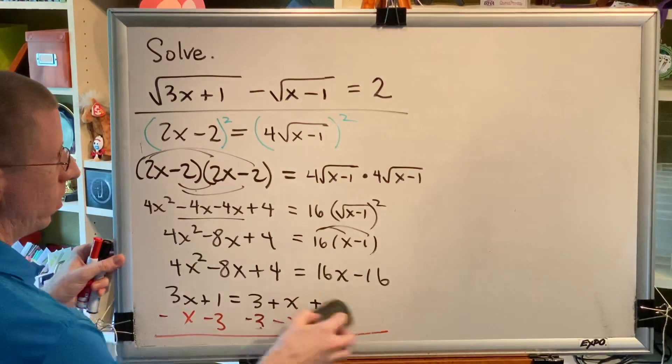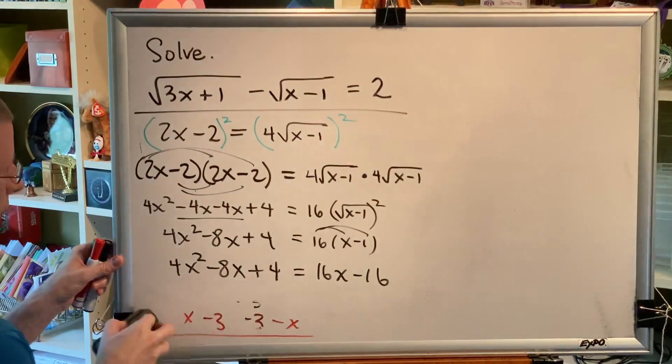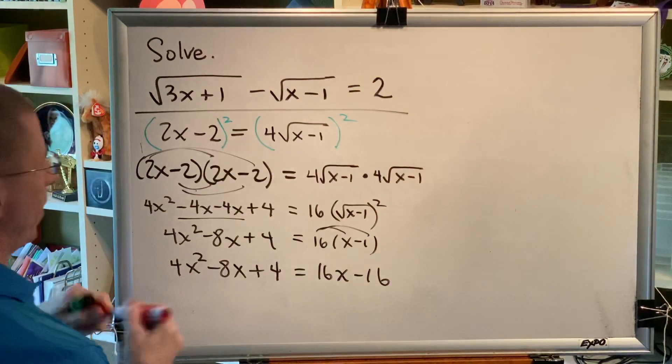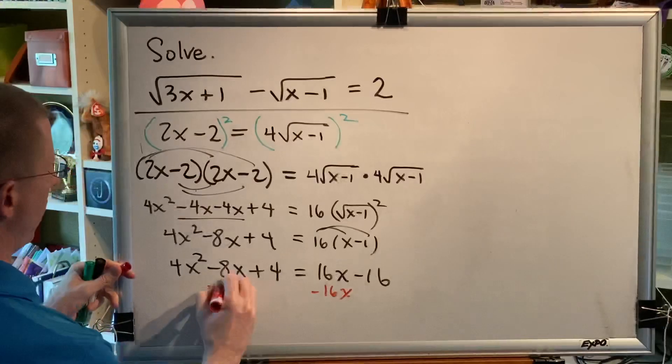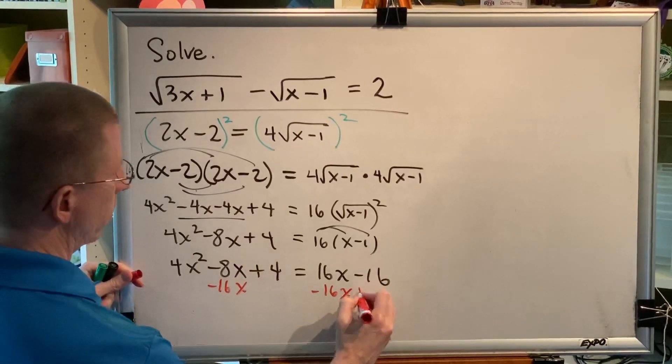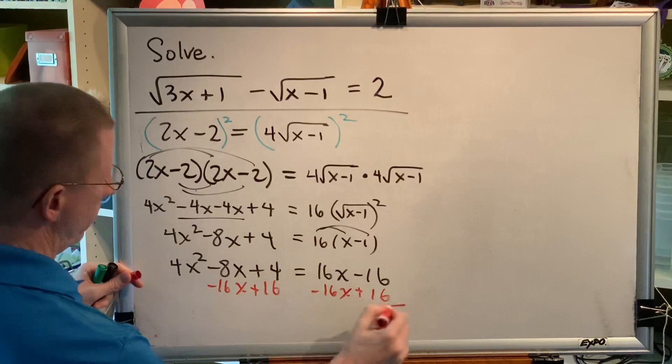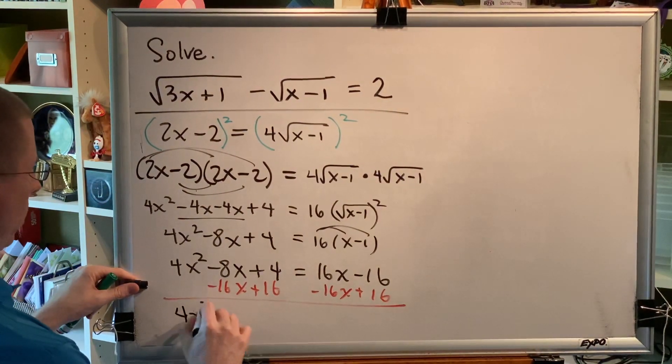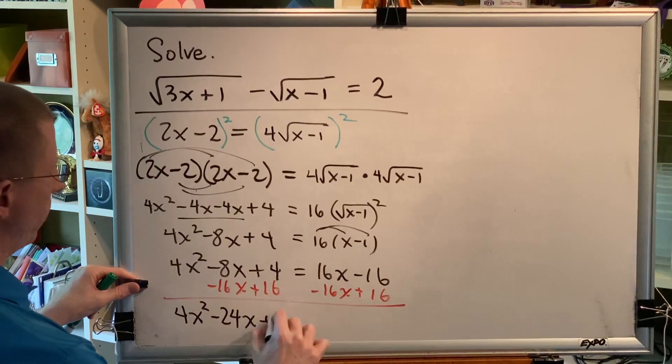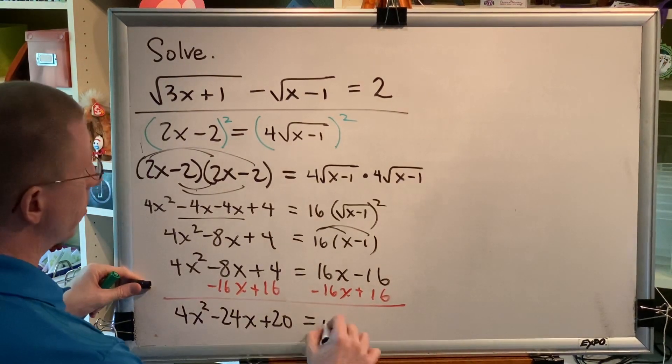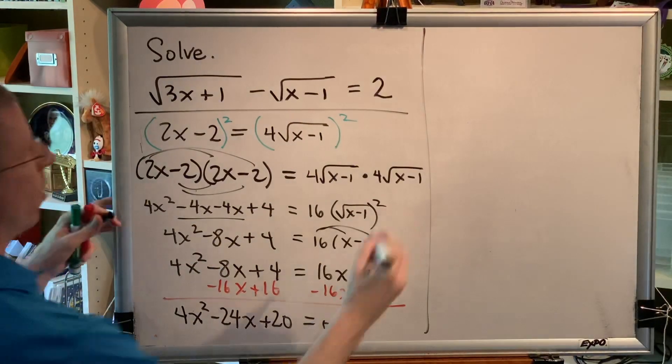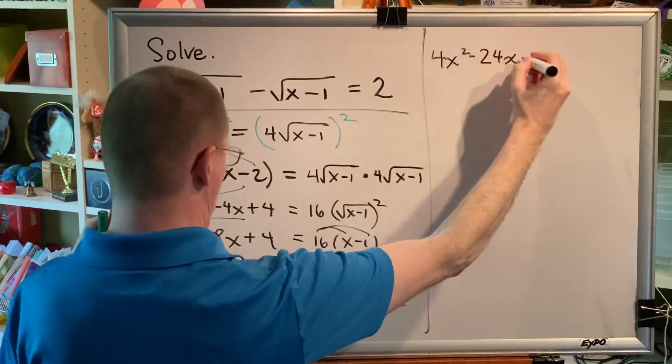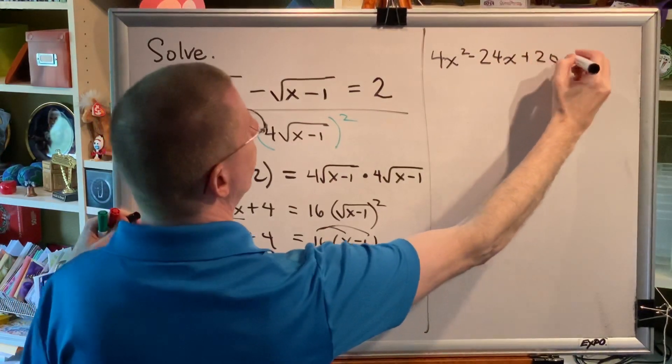This is a quadratic equation. We have several options for how to solve it. Let's get our equal 0. Minus 16x, minus 16x, plus 16, plus 16. So we get 4x squared minus 24x plus 20 equals 0. We'll start a new column.